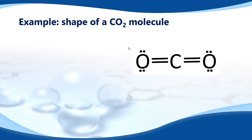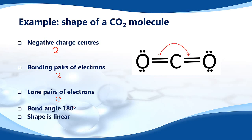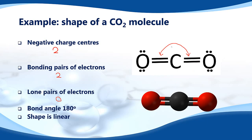Next is the shape of a CO₂ molecule. Here is the Lewis structure for CO₂. A double bond counts as one negative charge center, so we have two negative charge centers around the central carbon atom. A double bond also counts as one bonding pair, so there are two bonding pairs. There are zero lone pairs around the central atom. With two negative charge centers, two bonding pairs, and zero lone pairs, the bond angle is 180 degrees and the shape is linear. CO₂ takes the linear shape to minimize repulsion between the bonding pairs of electrons.